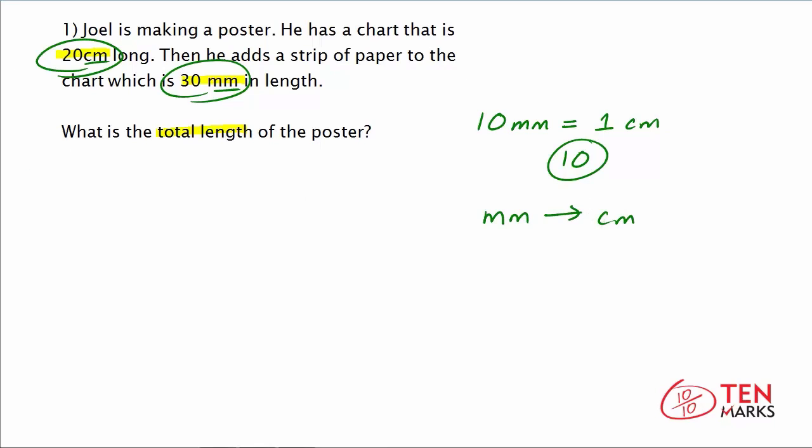So we have 30 millimeters, and we're going to divide by the conversion factor, which is 10. And this is going to give us the length of the strip of paper in centimeters. So 30 divided by 10 is 3. So the strip that Joel added to the chart is 3 centimeters in length.